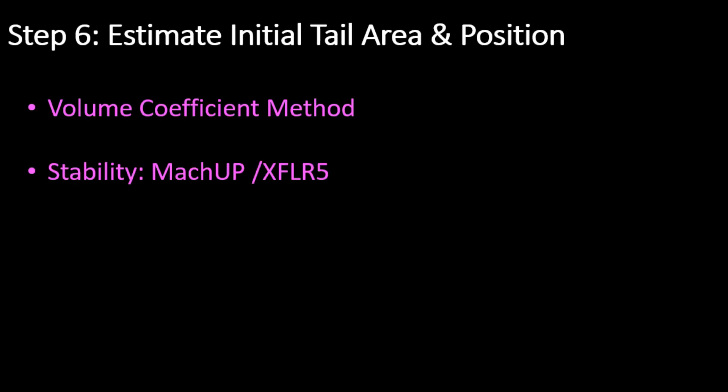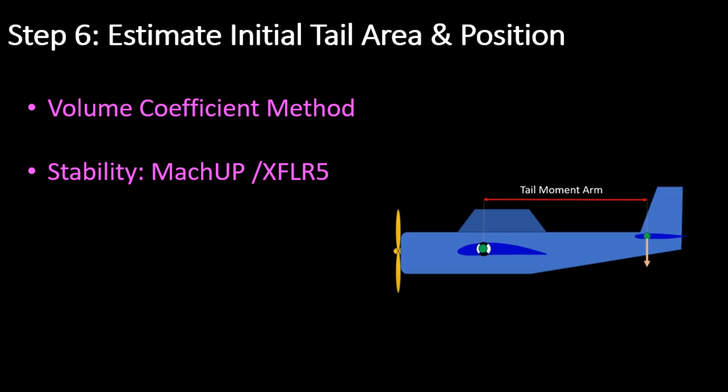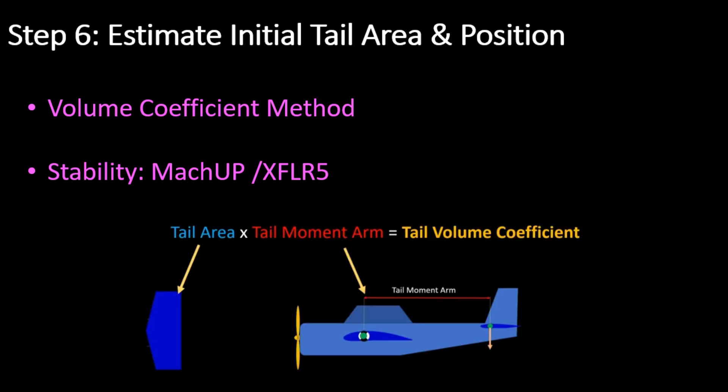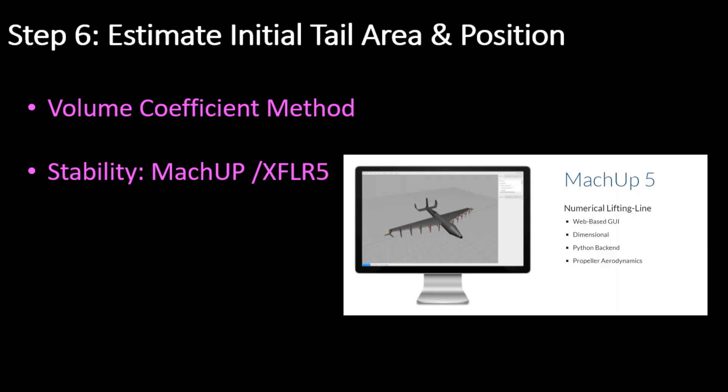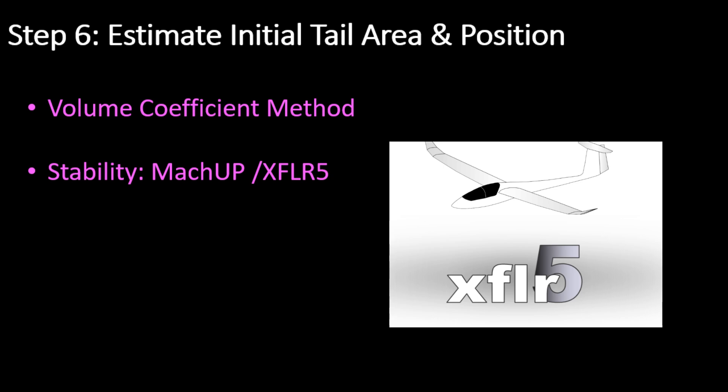Step 6: Estimate the initial tail area and position. For the initial design, this can be done by looking at the volume coefficients of similar planes. The purpose of the tail is to provide stability. You can use software such as Mockup or XFLR5 for a stability analysis.